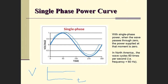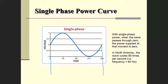In North America, we supply power at a frequency of 60 hertz, which means we get 60 cycles per second. If we look at the graph, this whole shape is one cycle. Our frequency is 60 hertz, meaning we would actually see, if we put it on a scope, that there are 60 of these cycles occurring every second.